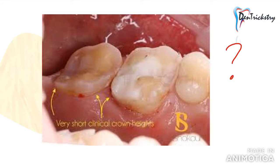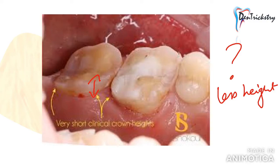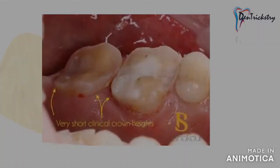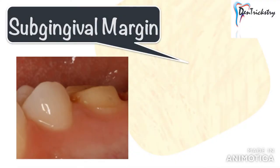So now if you end up placing a crown on this, how long do you think it will last? The retention and resistance form is obviously compromised in this case. So what can be done? The first option we will discuss is a sub-gingival margin.